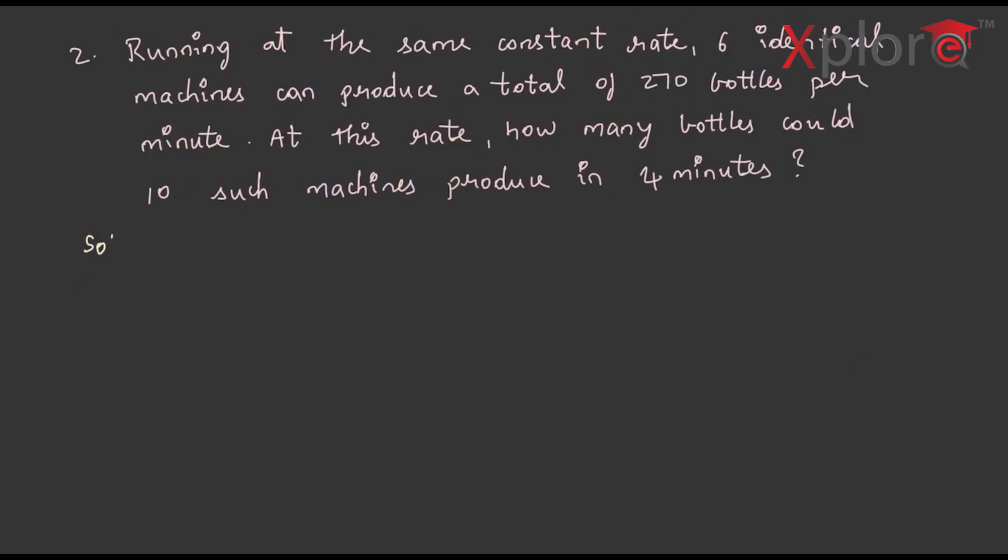Let us solve another question. Running at the same constant rate, 6 identical machines can produce a total of 270 bottles per minute. At this rate, how many bottles could 10 such machines produce in 4 minutes?